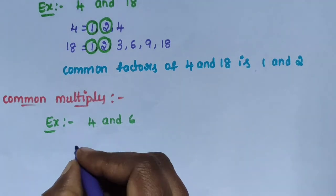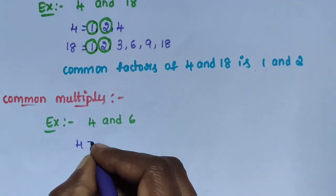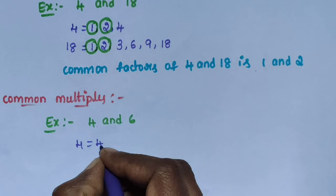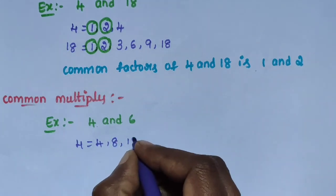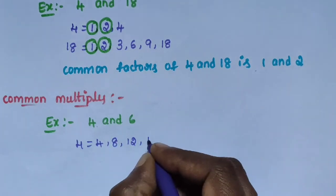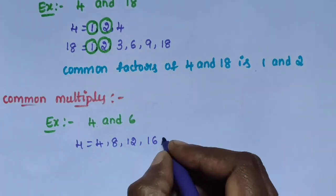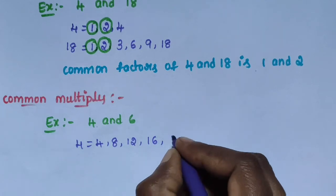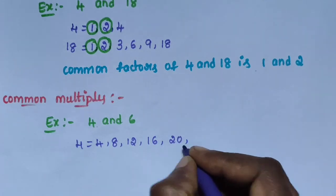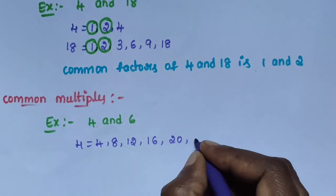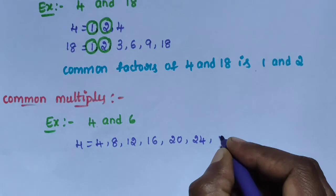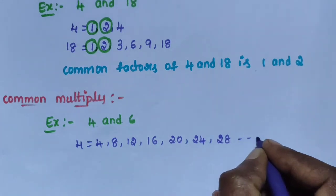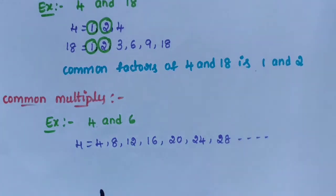The multiples of 4 are: 4 ones are 4, 4 twos are 8, 4 threes are 12, 4 fours are 16, 4 fives are 20, 4 sixes are 24, 4 sevens are 28, and so on.